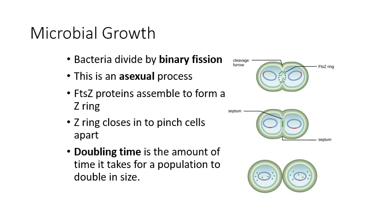First let's reestablish how bacteria reproduce. Most bacteria reproduce by a process called binary fission. It's an asexual form of reproduction, which means the bacteria are basically just making an identical copy of themselves. So what was one original bacterium becomes two identical daughter cells. This process works by the assembly of some proteins that we refer to as FTSZ.